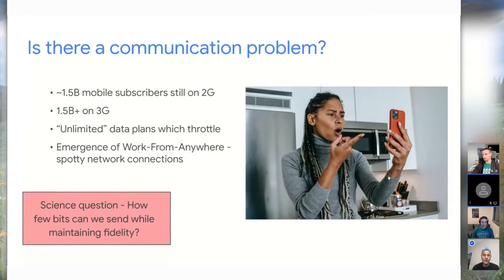That's quite a lot — one and a half billion people — and the same number, even a little bit more, are on 3G networks. So they have very little bandwidth available for both audio and video. And another thing is these unlimited data plans where you have a high data rate, but then you max out and throttle to 64 kilobits per second. At 64 kilobits per second, there's like 30 kilobits left for audio and video, and even less.